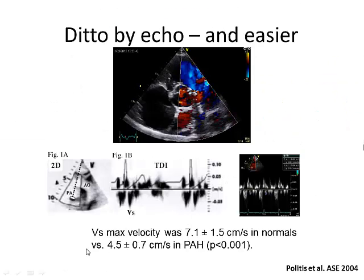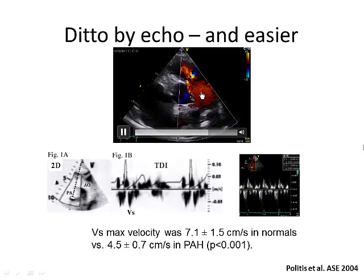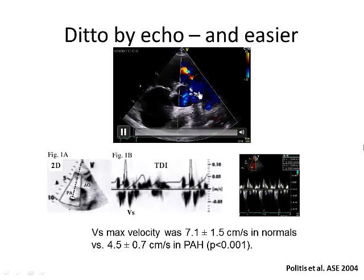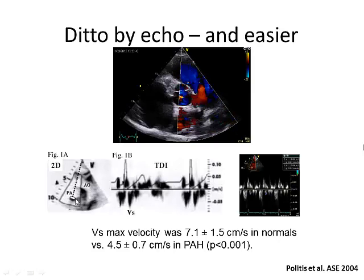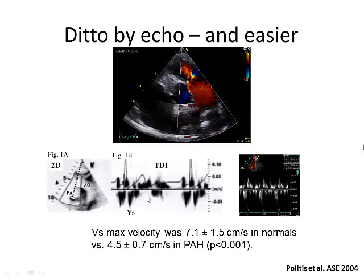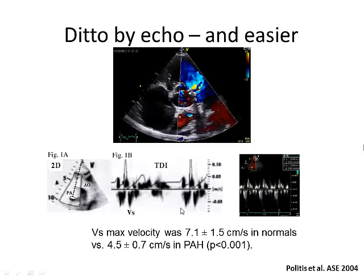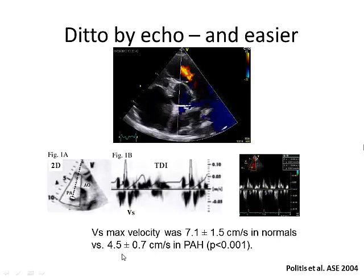Interestingly, you can also do this by echo, and it's a lot easier. In echo, red goes towards the probe and blue away. In the main pulmonary artery in systole, you can see red — that's a reflected wave and retrograde flow. Using a Doppler sample volume in the far wall of the right pulmonary artery, you can measure the systolic velocity of expansion with M-mode and look at the change in radius. In PAH patients the Vmax of expansion was 4.5 cm/s versus 7.1 cm/s in normals.